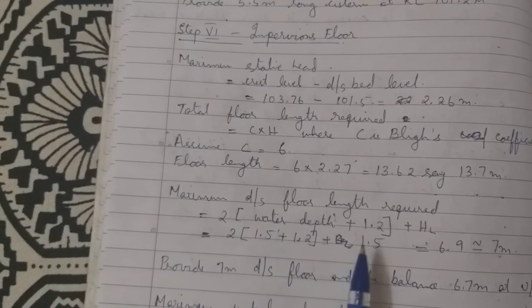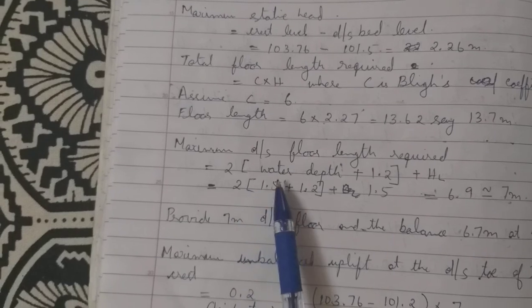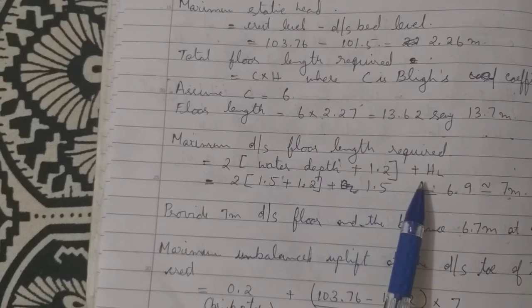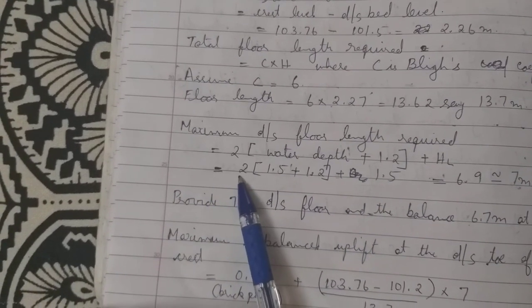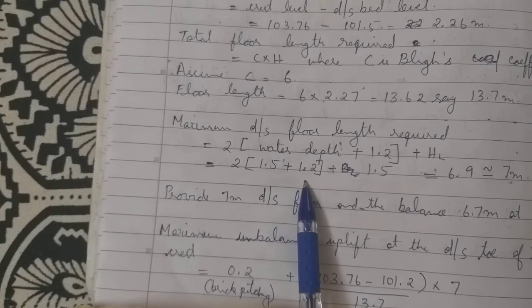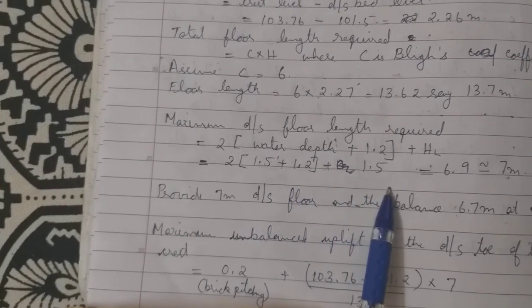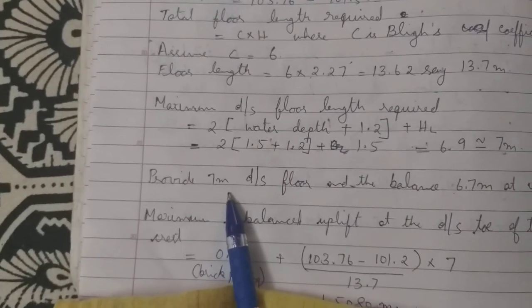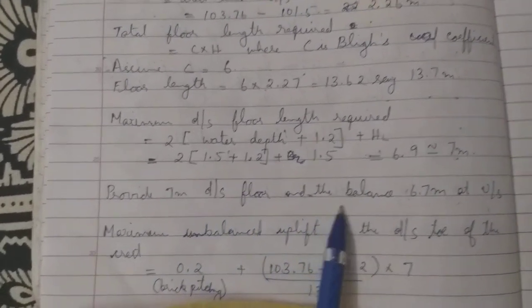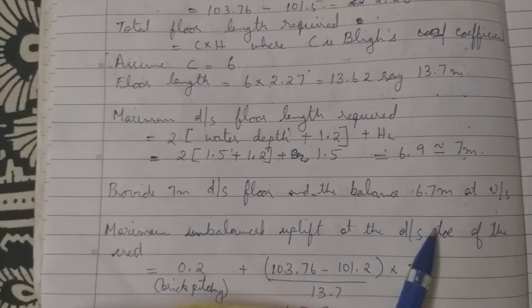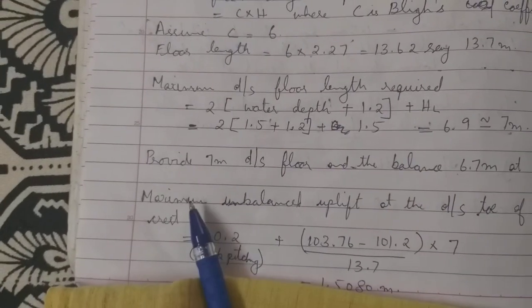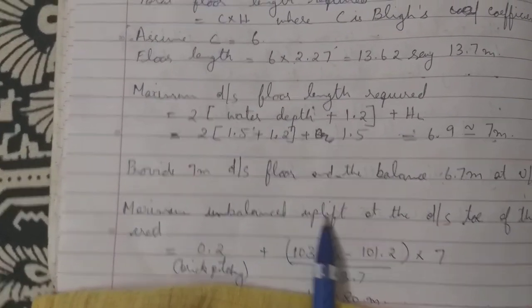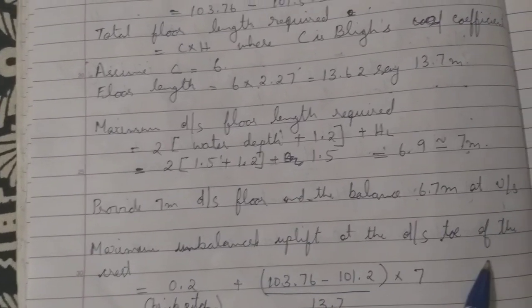Maximum downstream floor length required is equal to 2 into water depth plus 1.2 plus hl, which equals 2 into 1.5 plus 1.2 plus 1.5, equal to 6.9, approximately 7 meters. Provide 7 meter downstream floor level and the balance 6.7 at upstream level.